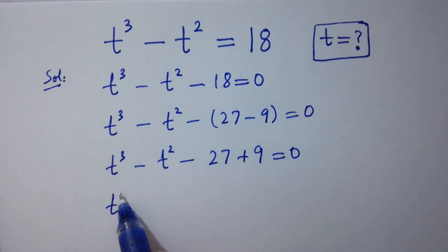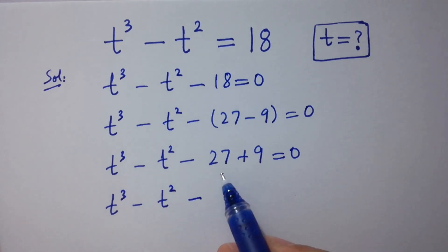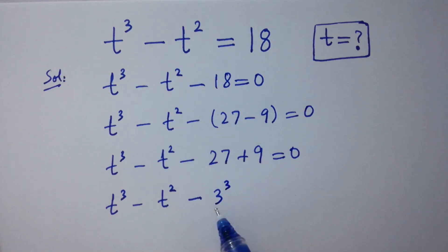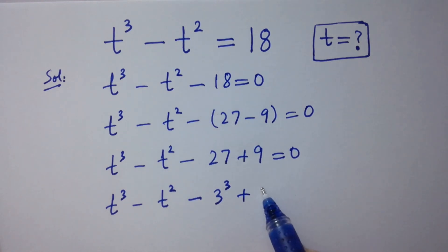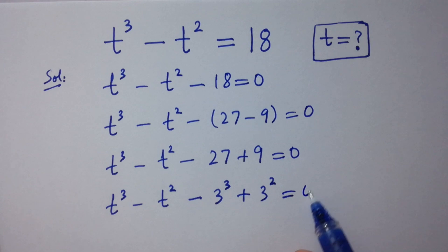So t cubed minus t squared minus 27 — and 27 is 3 cubed, since 3 times 3 is 9 and 9 times 3 is 27 — plus 9, which is 3 squared since 3 times 3 is 9, equals 0.